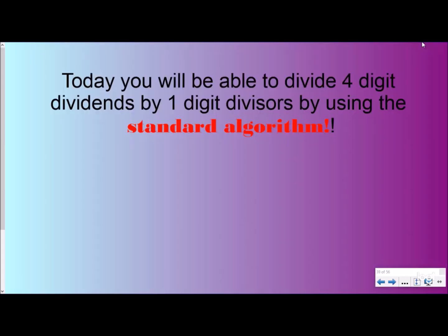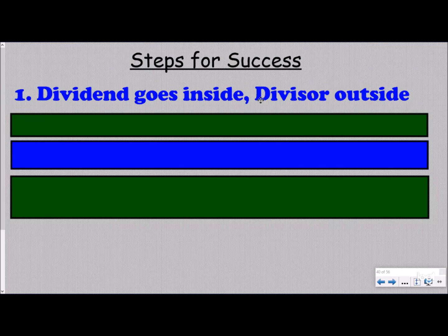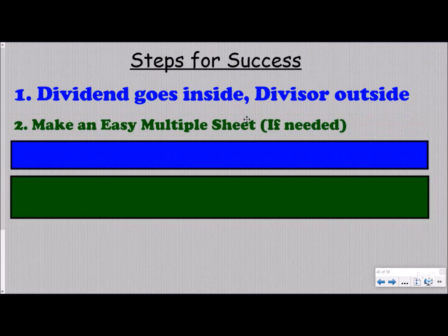So today you will be able to divide four-digit dividends by one-digit divisors by using the standard algorithm. So again we're focused specifically on the standard algorithm in these lessons. These are the same steps for success that we had for our two and three-digit dividends. First of all, the dividend goes inside, the divisor goes on the outside.